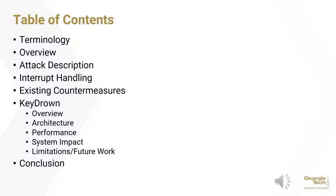The table of contents for this presentation is as follows. We'll begin with a review of the relevant terminology and then give a high-level overview of the paper's structure. We'll then describe what a keystroke timing attack looks like and then discuss interrupt handling on Linux and ARM architectures. We'll explore the existing countermeasures and then jump into the details of KeyDrown, including an overview of its function, the design and architecture, the performance against attacks, runtime impact on the system, and self-identified limitations and future work. We'll then conclude by reiterating the ideas presented.